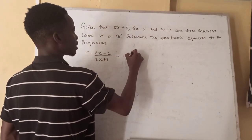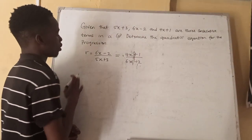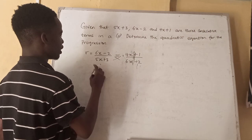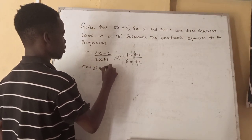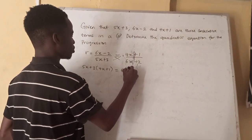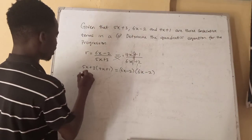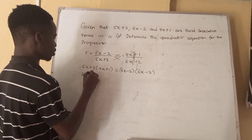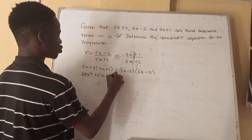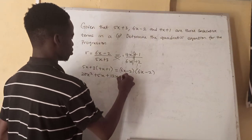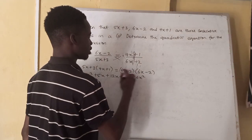Cross multiplying, we have (5x plus 3)(4x plus 1) equal to (6x minus 2)(6x minus 2). Expanding the left side: 5x times 4x is 20x squared, 5x times 1 is plus 5x, 3 times 4x is plus 12x, 3 times 1 is plus 3. On the right side: 6x times 6x is 36x squared, 6x times negative 2 is minus 12x, minus 2 times 6x is minus 12x.